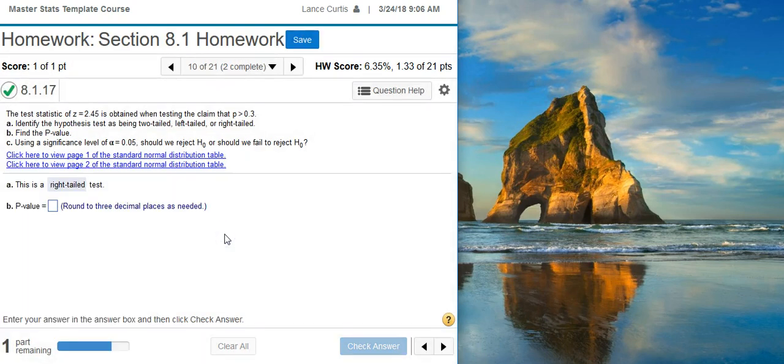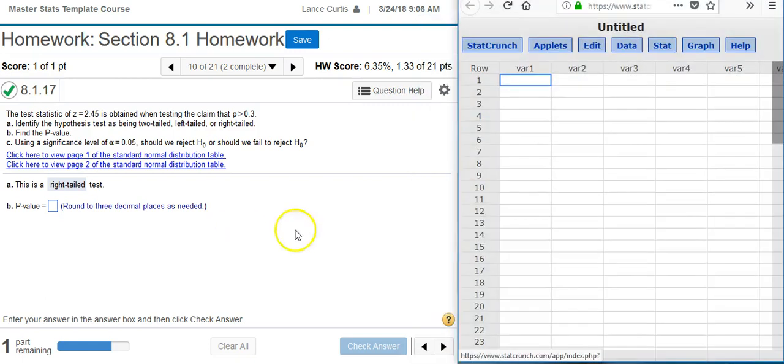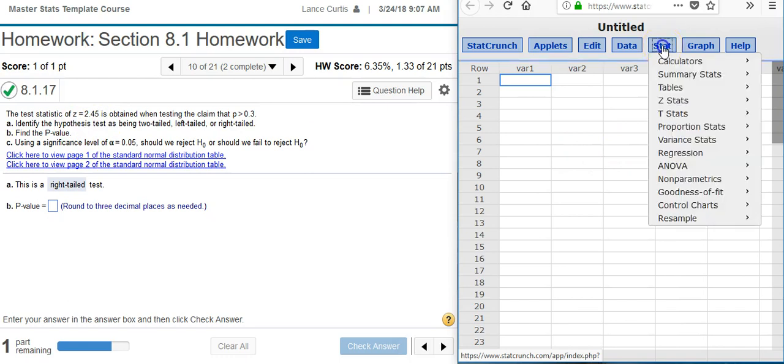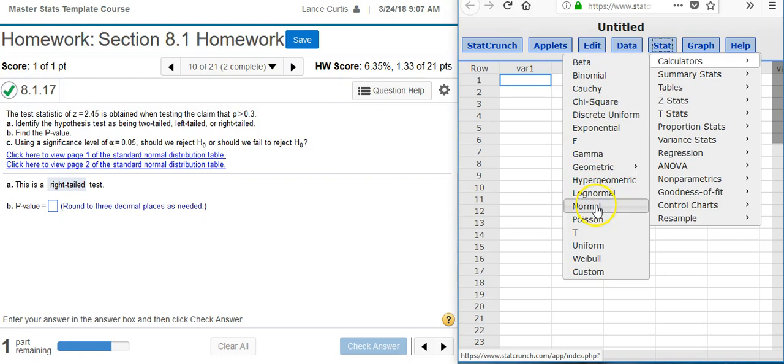Now, part B asks us to find the p-value. To do this, I'm going to pull up StatCrunch and get into my normal calculator. The only thing we have to go on is the z-score, and so that's why I'm pulling up the normal calculator. So to do that, I go to Stat, Calculator, Normal.